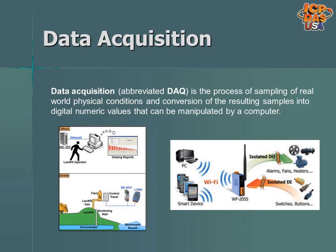Data acquisition is the process of sampling real-world physical conditions like temperature, pressure, and tank levels, and the conversion of the resulting samples into digital numeric values that can be manipulated by a computer or controller. You may want to monitor things like methane gas levels and temperature at a landfill. With wireless communication products, you can set up applications so you can see the data from a landfill from a remote location like at your home or office. Different kinds of information can be retrieved from remote applications like the status of control panel doors being opened or closed, gas, and water levels. Wireless data acquisition allows for inputs and outputs like temperature, switches, fans, and buttons from sensors to be monitored and controlled wirelessly over different networks.